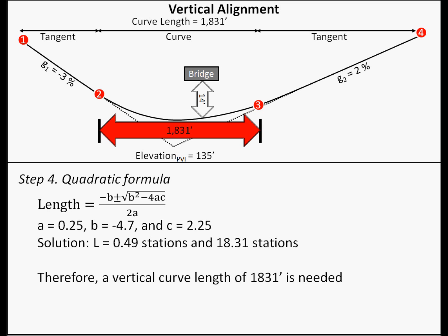The 49 foot length can be eliminated from consideration since it is too short for a safe vertical curve, and is also shorter than the minimum length of curve based on the distance from the PVI to the bridge. Therefore, the new vertical curve will need to have a length of 1,831 feet to satisfy the minimum clearance of 14 feet underneath the railroad bridge.